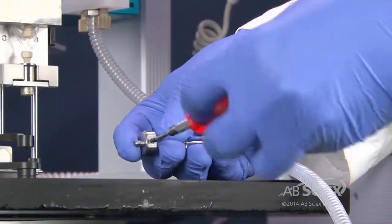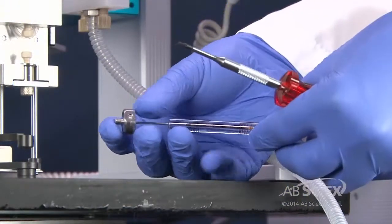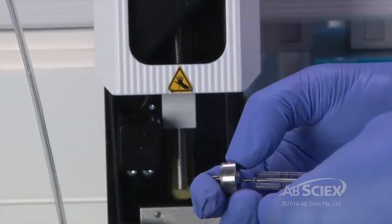Using a T6 Torx driver, remove the plunger holder from the removed syringe and refit onto the new syringe.